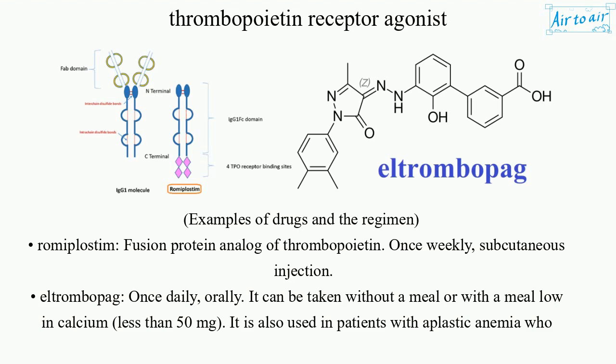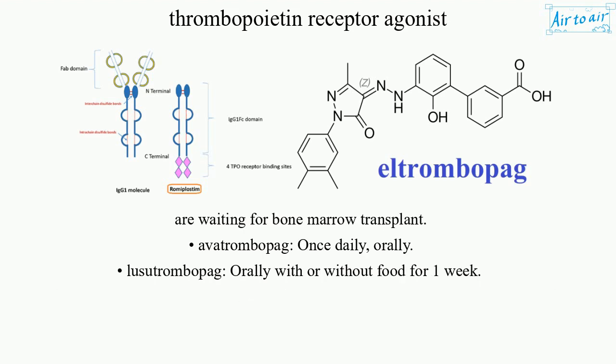Eltrombopag can be taken without a meal or with a meal low in calcium (less than 50 mg). It is also used in patients with aplastic anemia who are waiting for bone marrow transplant. Avatrombopag is given once daily orally. Lusutrombopag is taken orally with or without food for one week.